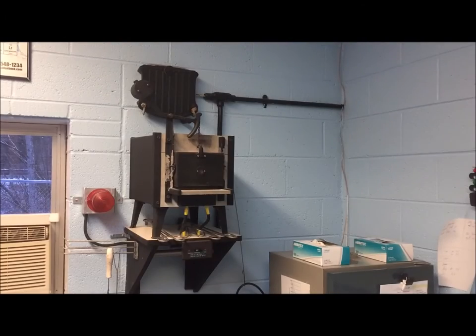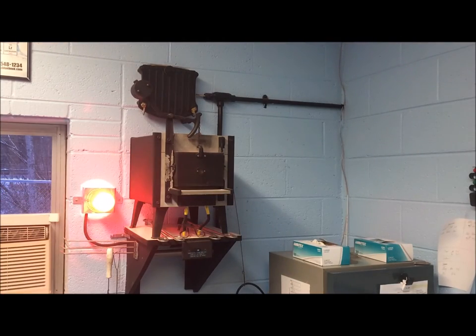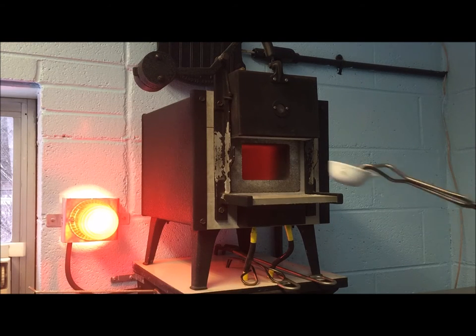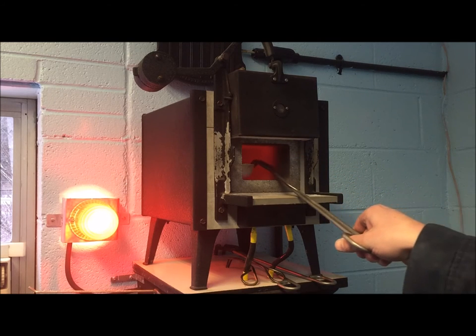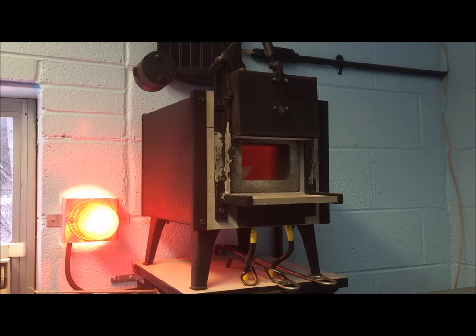To test the volatile portion of our samples, we must place the samples in a muffle furnace. The furnace is set at a temperature of 500 degrees Celsius or 932 degrees Fahrenheit. The high heat is used to burn off all the volatile solids so we can weigh the remaining non-volatile solids.